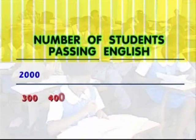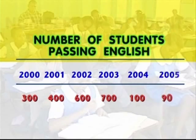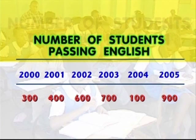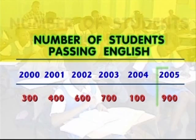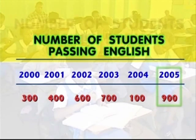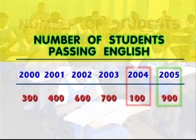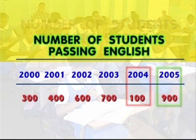Let us look at another example. The following table gives the number of students who passed an exam over a six-year period. It is obvious that 2005 was the standout year for passes, while 2004 saw the lowest pass rate over the six-year period.